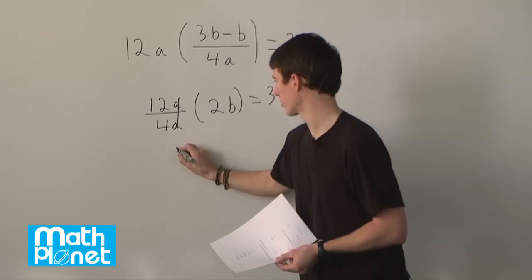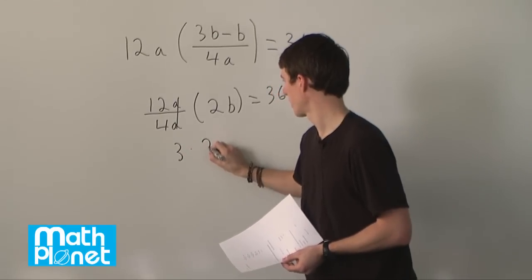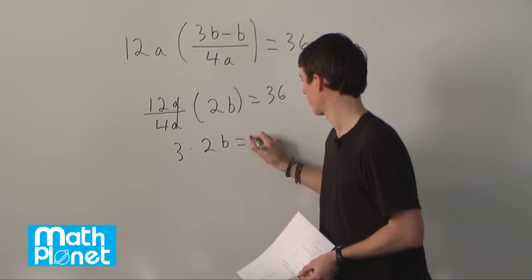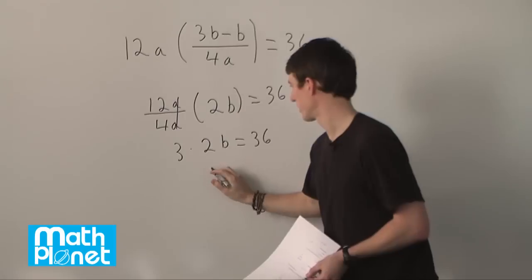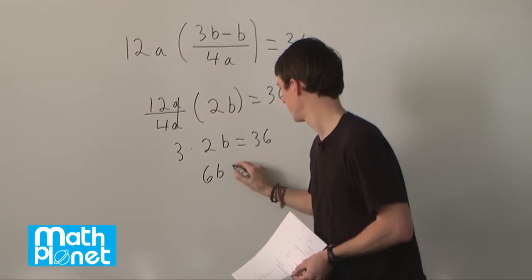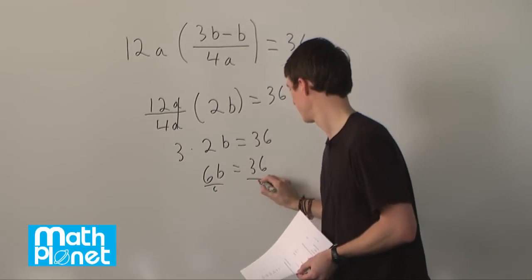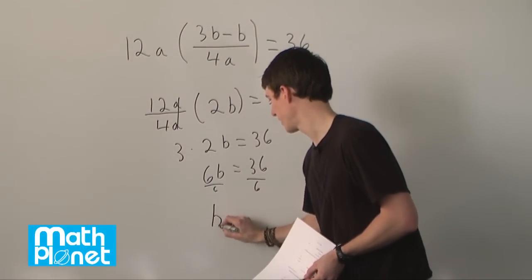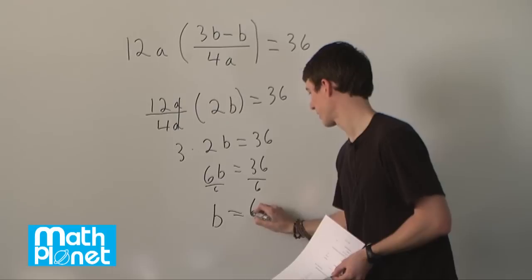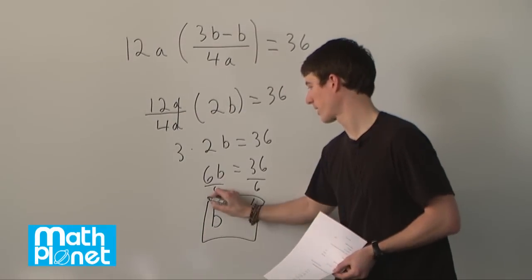So 12 divided by 4 is just 3, 3 times 2b equals 36, and this is 6b equals 36. Divide both sides by 6 and that gives us b is equal to 6. And that's our final answer.